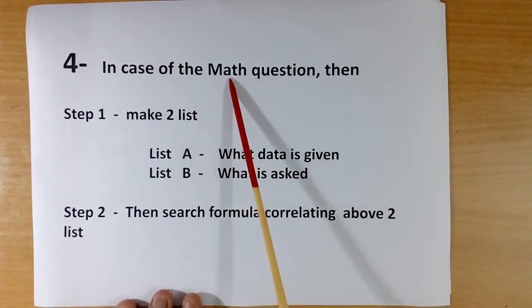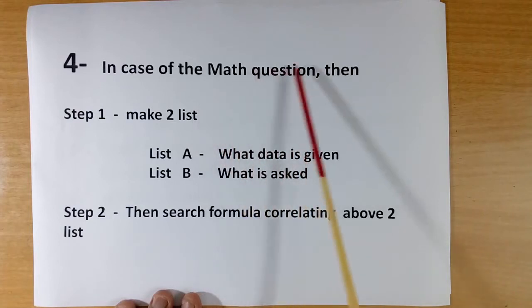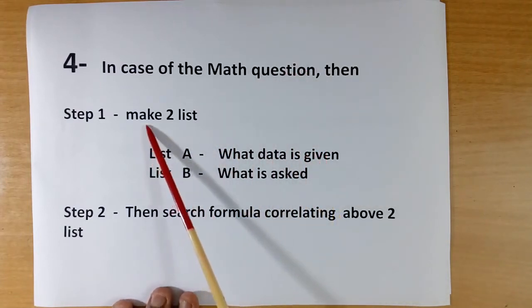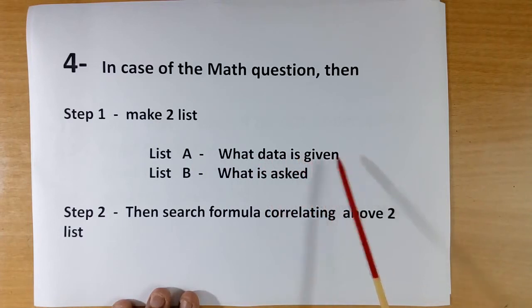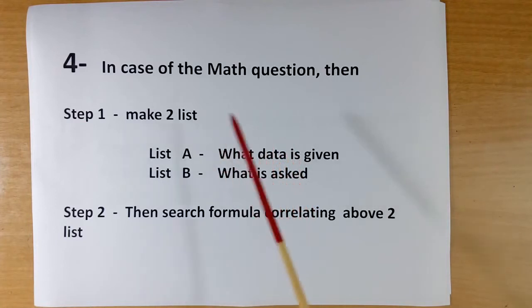Fourth is applicable for math questions. If you have math questions, after reading, you make two lists. List A, what data is given. In every math question, some data are given, and some data are asked. So make two lists. You write down. Don't remember. Write down on a piece of paper.